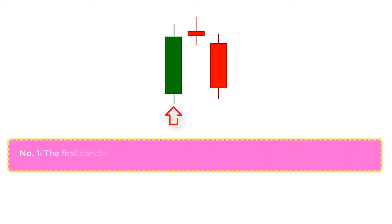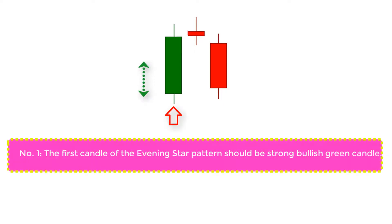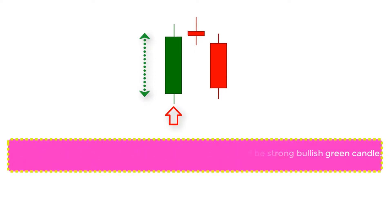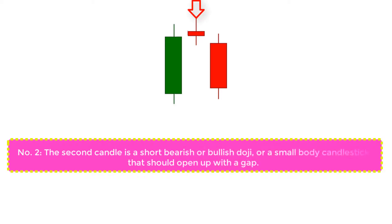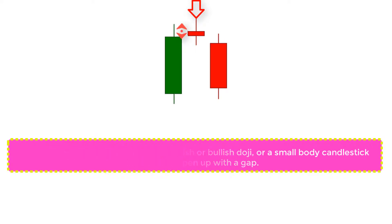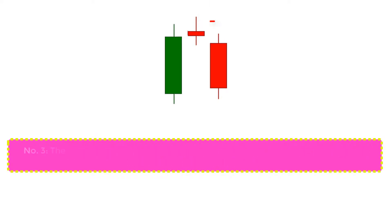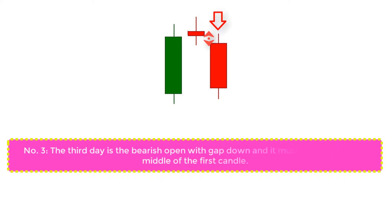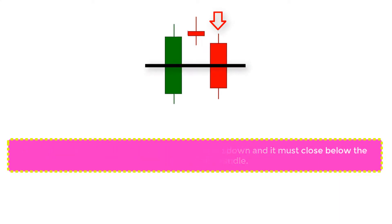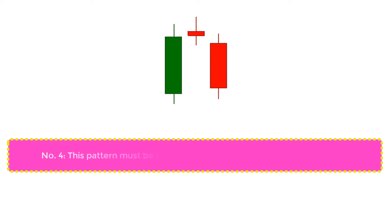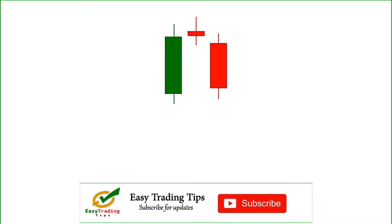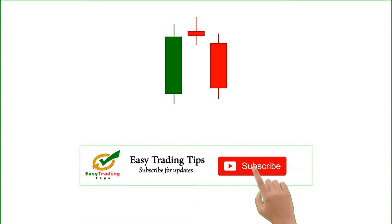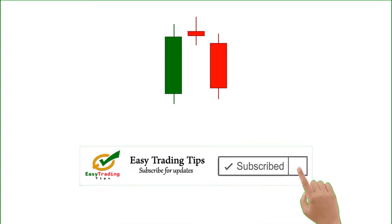Number 1: the first candle of the evening star pattern should be a strong bullish green candle. Number 2: the second candle is a short bearish or bullish doji, or a small body candlestick that should open up with a gap. Number 3: the third candle is bearish, opens with a gap down, and must close below the middle of the first candle. Number 4: this pattern must be formed at the resistance or overbought areas. These 4 points are very important for determining a 100% perfect evening star candlestick pattern.